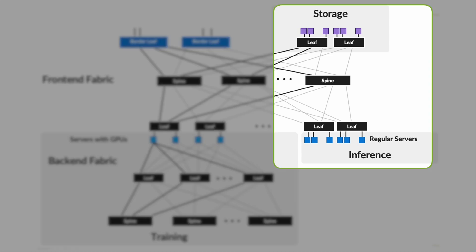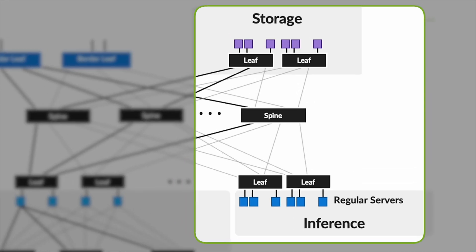Then we have the storage and inference network. Data is key, and storage is a critical component of any ML infrastructure. The network design should prioritize fast and reliable access to data. For inference at scale, the network should handle the demands of inference workloads, which can vary significantly in terms of volume and latency requirements. The architecture should be flexible enough to support different types of storage and inference solutions, allowing you to choose the best option that suits your needs.